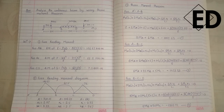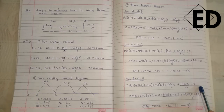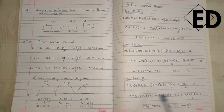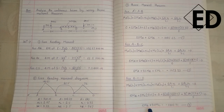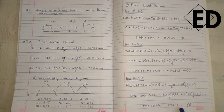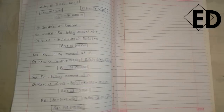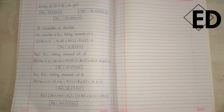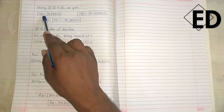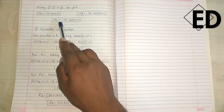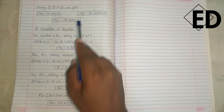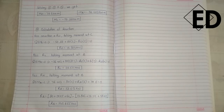Similarly for span BCD, the same Three Moment Theorem equation is used. Putting all values of L1, L2, A1, x1, A2, x2 and rearranging, we get: 5 M_B + 20 M_C = −1201.71 — equation 3. Solving these three simultaneous equations gives: M_A = −70.6 kN·m, M_B = −36.403 kN·m, and M_C = −50.98 kN·m.